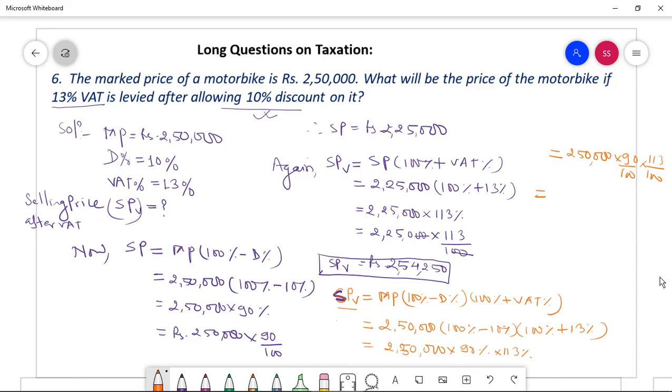So can you calculate, dear students, this amount? SPV equal to... can you calculate this one? Two three four, two zeros, two zero cancel, two zero cancel. Two five into 90 into one, understood? Equal to 2,54,250. You see, it is a direct formula.